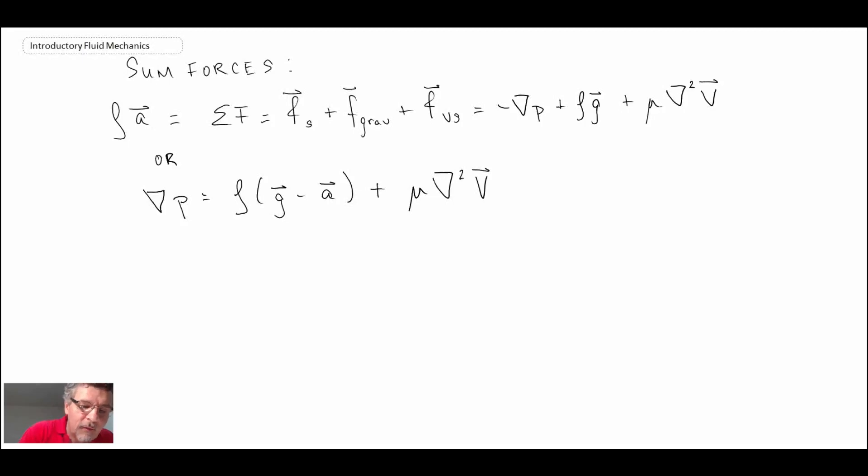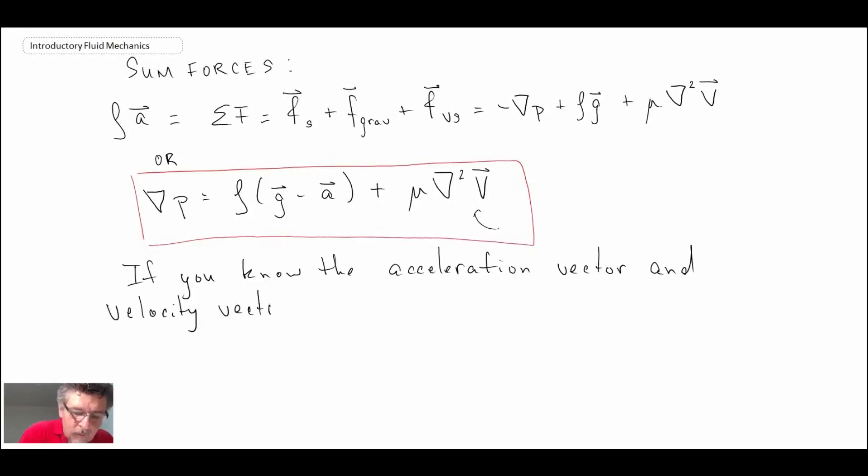And this is the most general form of fluid static equation. What we'll be doing actually would not be fluid static because we have the velocity term here. So you could have velocity field. But we'll make some simplifications in order to get rid of that that I'll talk about shortly. So what we can say is that if you know your acceleration vector and if you know the velocity vector, you can determine the pressure distribution in the fluid.